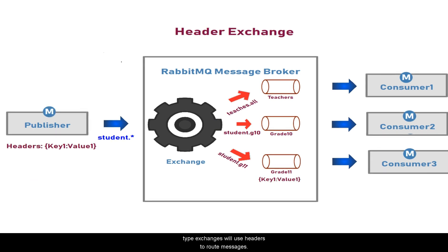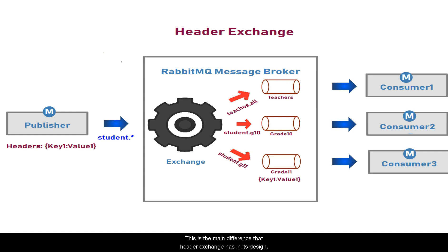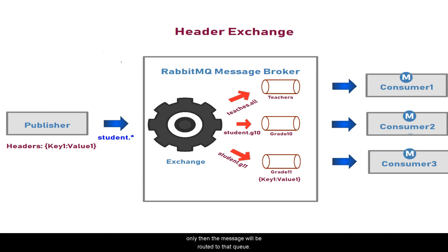The next exchange type is header exchange. This type of exchange uses headers to route messages, whereas direct exchange and topic exchange use routing keys. This is the main difference in header exchange's design. The header parameters passed in the message must match the parameters specified in the binding queue — only then will the message be routed to that particular queue.